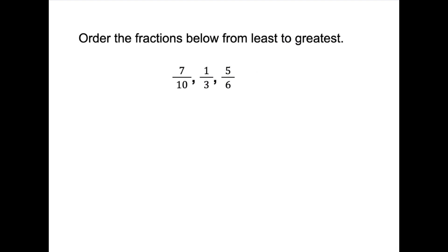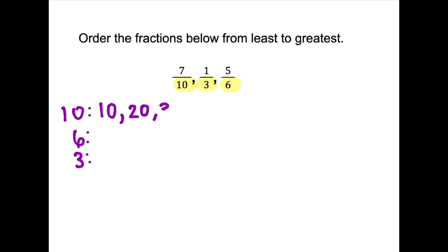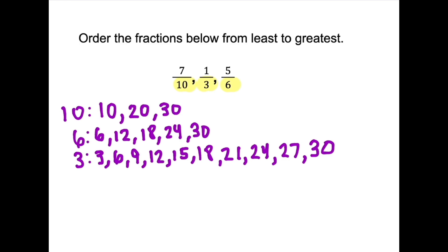That last example was very easy because the fractions had the same denominator. Ordering fractions with unlike denominators gets a little bit trickier. Notice that our denominators are not the same — we have a 10, a 3, and a 6. The first step is to find the common denominator using the LCM, or least common multiple. Multiples of 10: 10, 20, 30. Multiples of 6: 6, 12, 18, 24, 30. Pause the video and find the multiples of 3. You can see the LCM that they all have in common is 30.